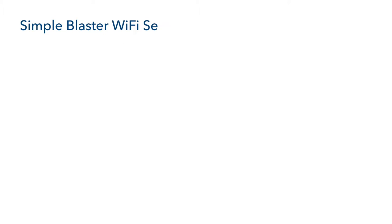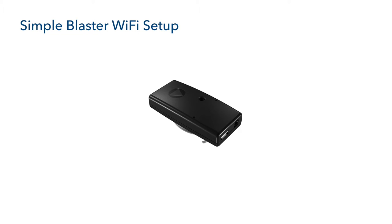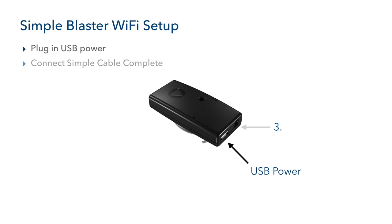Before we can begin programming SimpleSystem, we need to go to Hardware Setup. We have determined that our Blu-ray player and TV will require IR control, so we need to use the Simple Blaster Complete. We plug the Simple Blaster into power using the provided USB power cable, then connect the Simple Cable Complete by plugging it into the 3.5mm plug on the Simple Blaster. We are now ready to place our emitter cable.